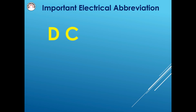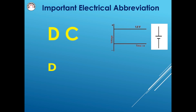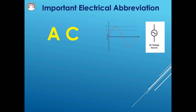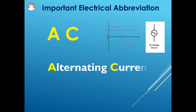DC: Direct Current. AC: Alternating Current.